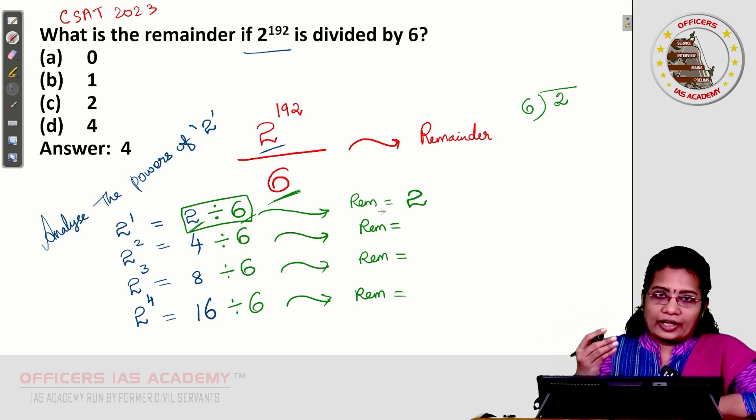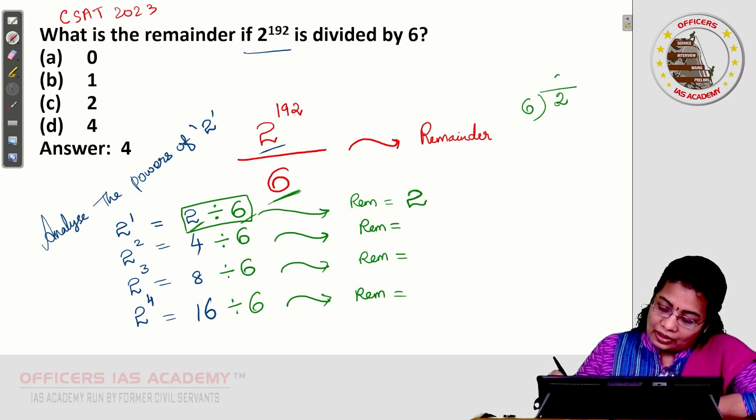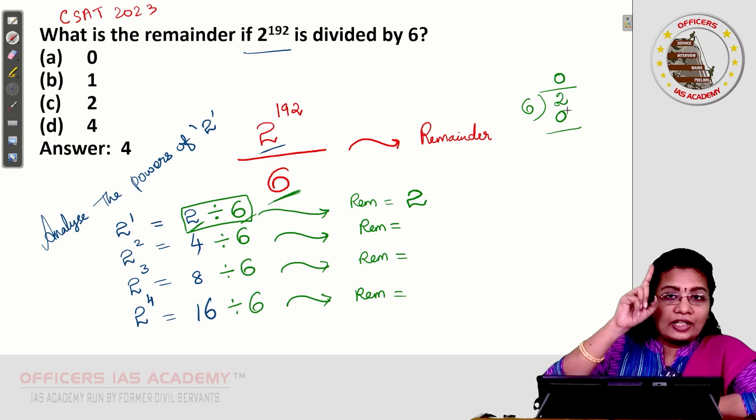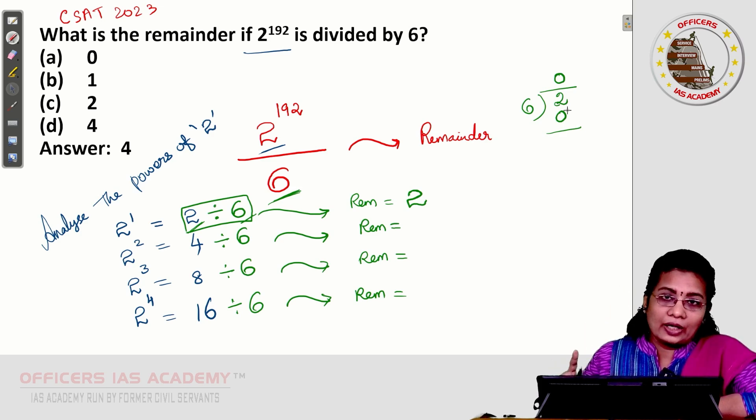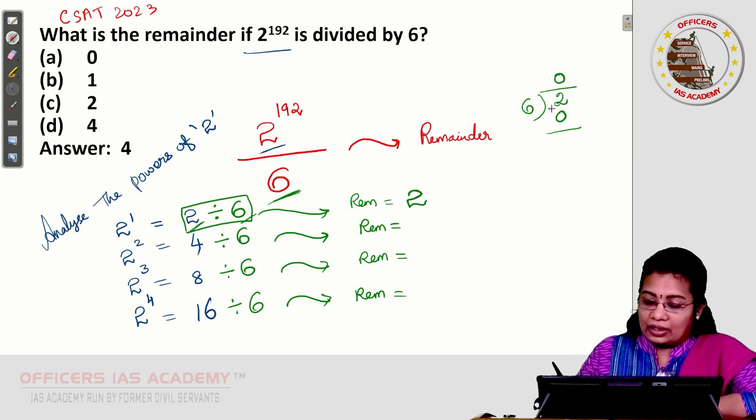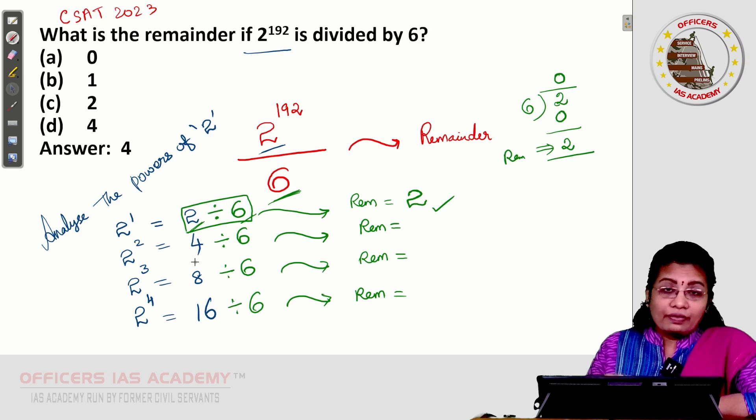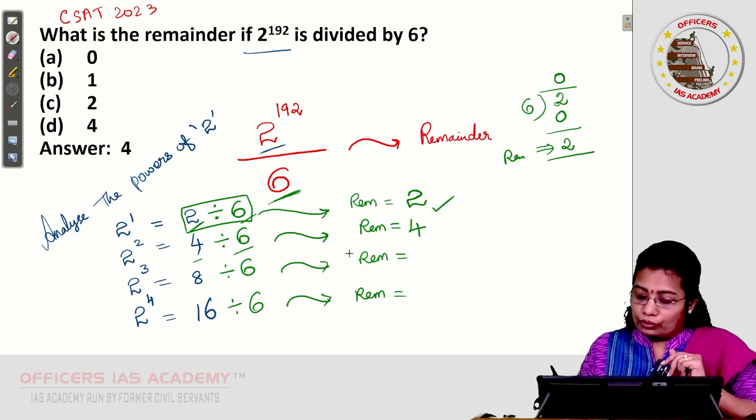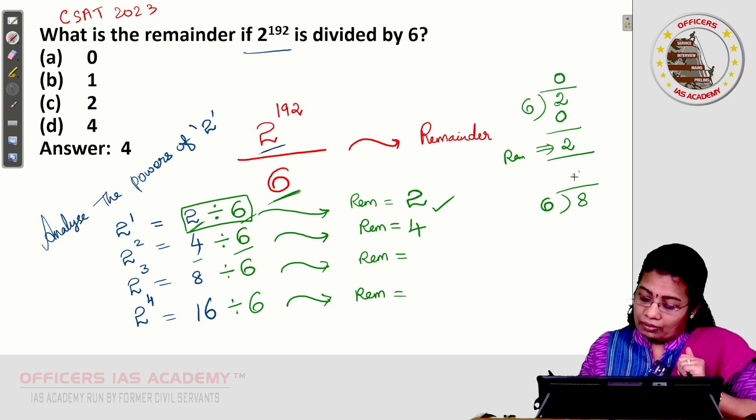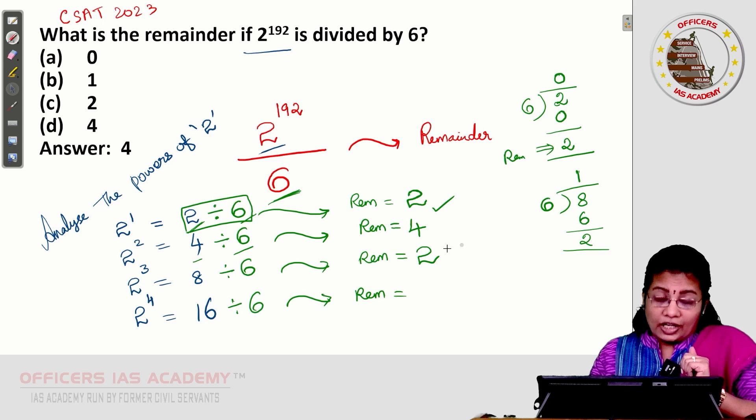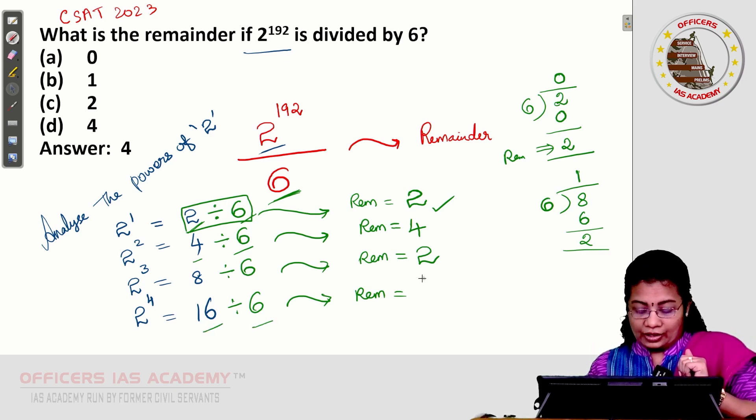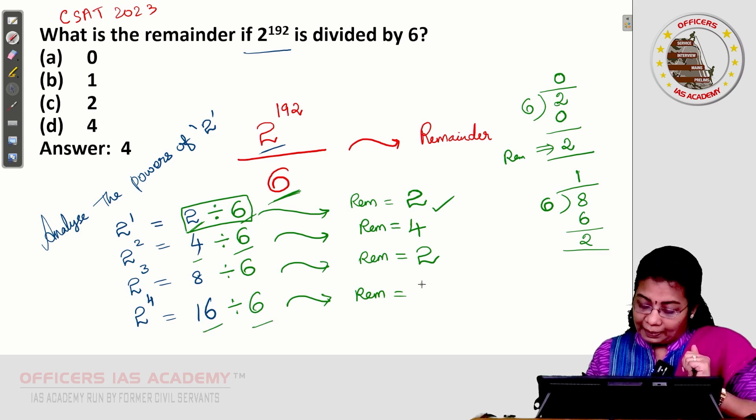Otherwise, if you want to do the calculation, you can make like this. 0 times 6 is 0 because 1 times 6 if you take, you will get negative remainder. So you can take in this way. A positive remainder we got is 2. Similar way when 4 divided by 6, remainder is 4. 8 divided by 6, what is the remainder? Remainder 2. 8 divided by 6, 1 times 6 is 6, remainder 2. Again, 16 divided by 6, the remainder I will get 2 times 6 is 12, the balance is 4.